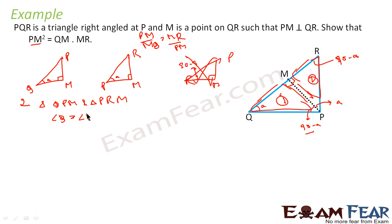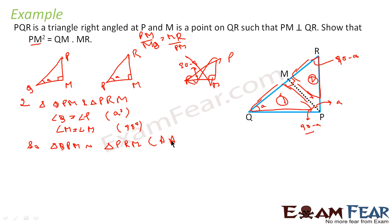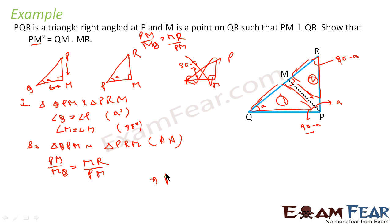In these triangles, angle Q is equal to angle P — both are A degrees. Angle M is equal to angle M — both are 90 degrees. So they are similar. Therefore triangle QPM is similar to triangle PRM by AA rule. Since they are similar, I can write PM/MQ is equal to MR/PM, and I get PM² is equal to MR into MQ.